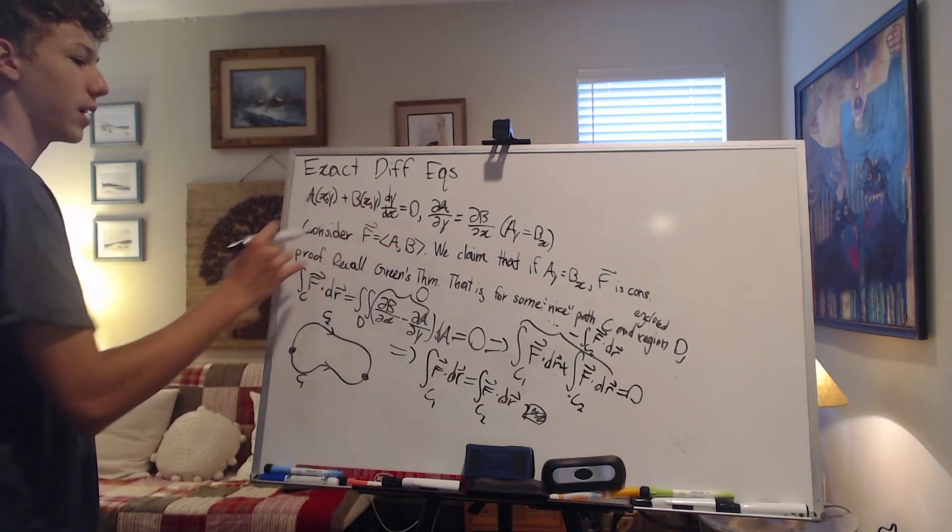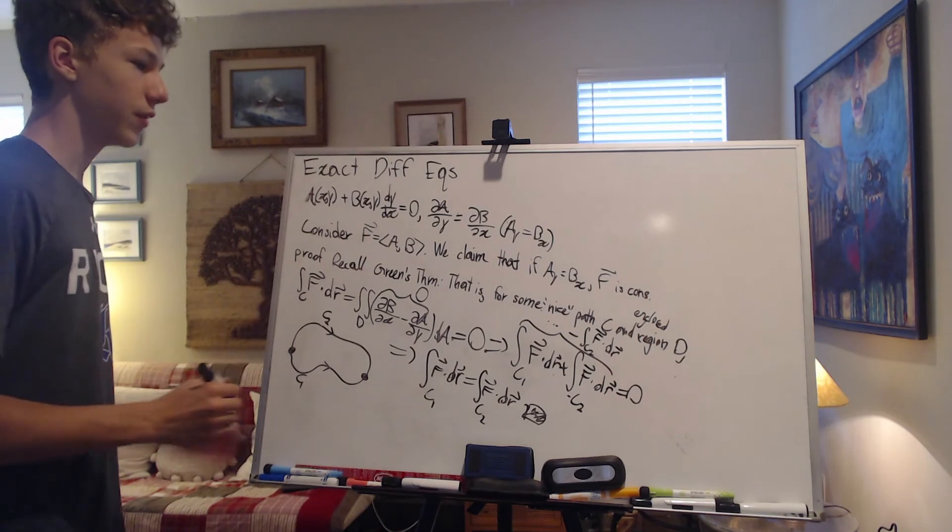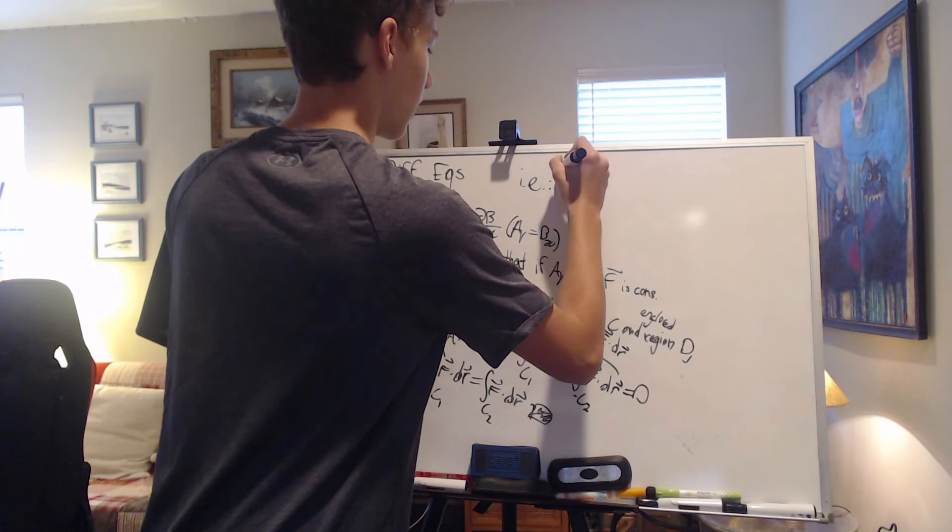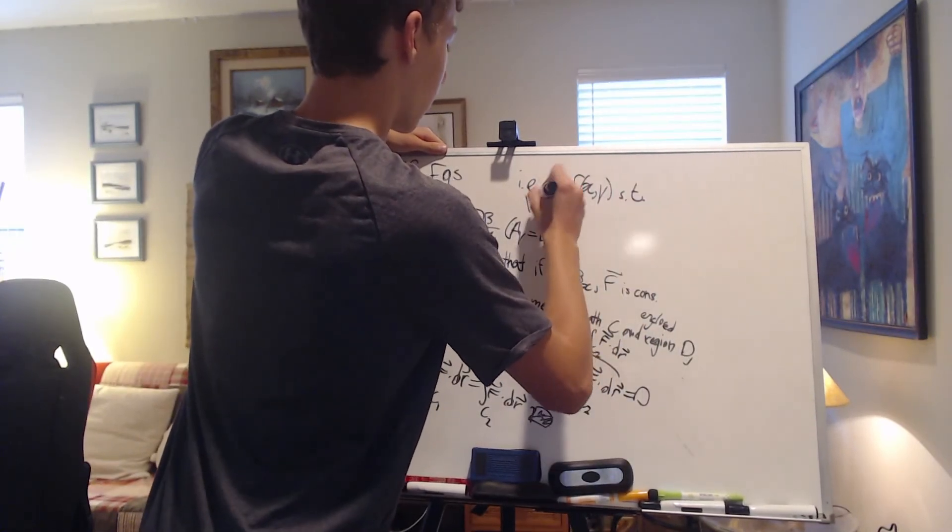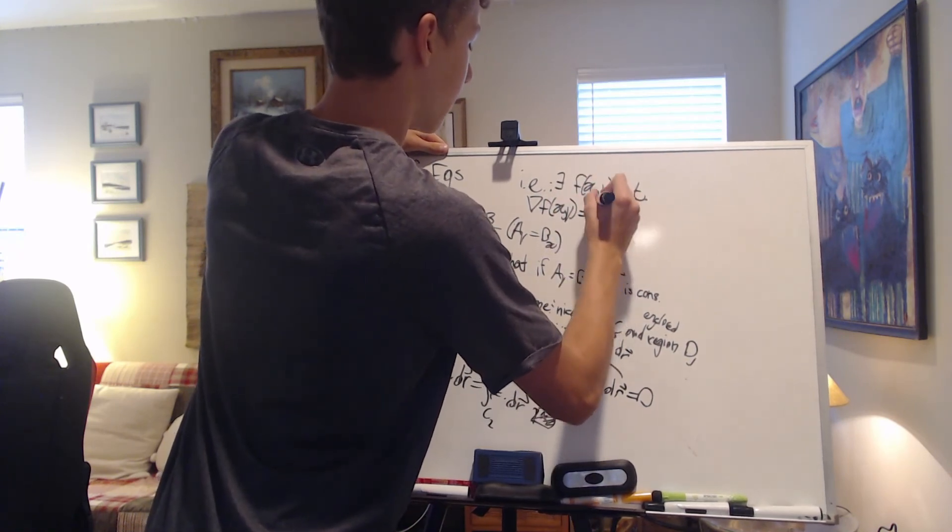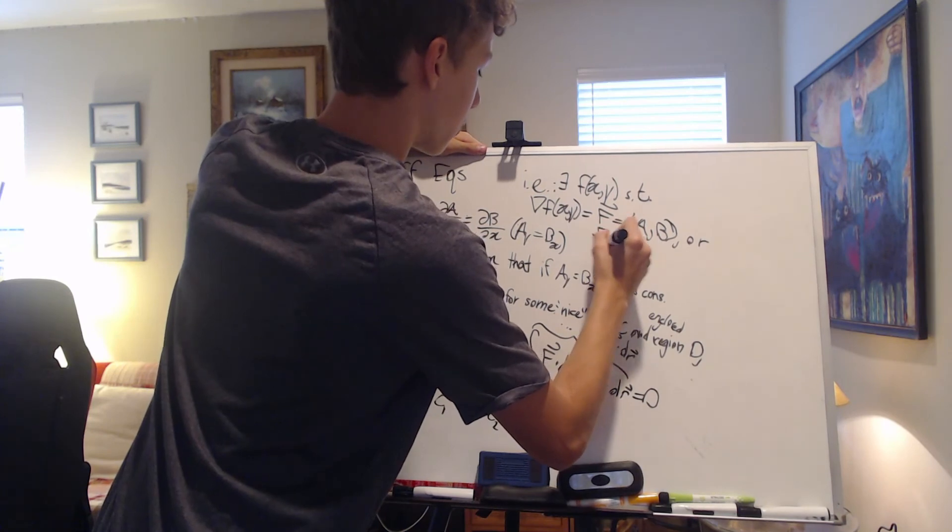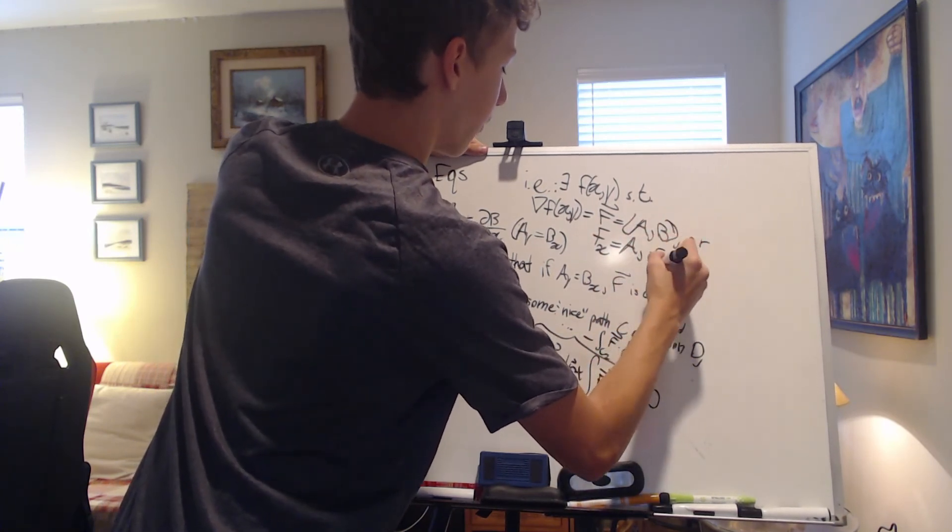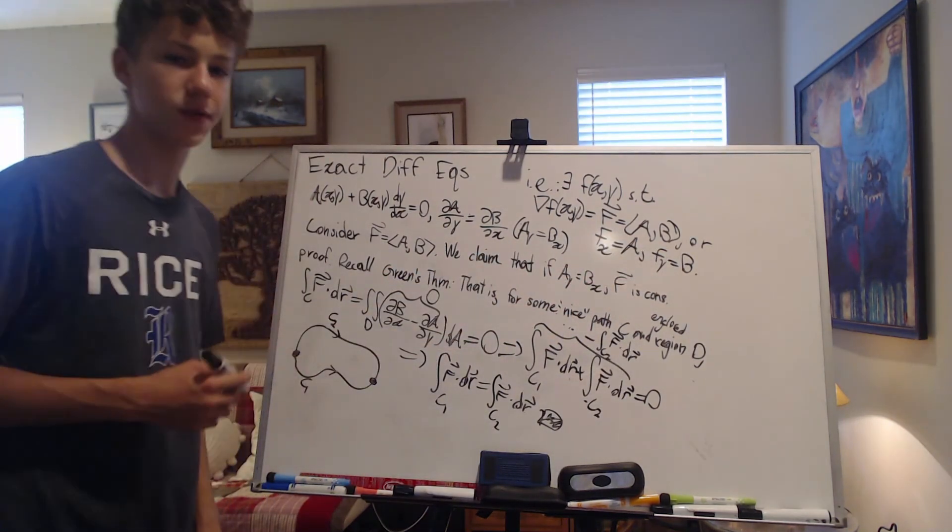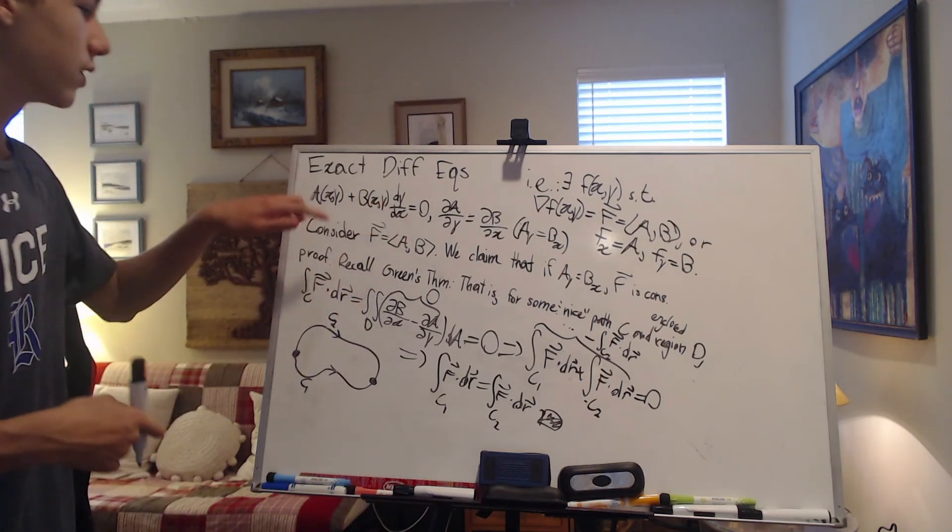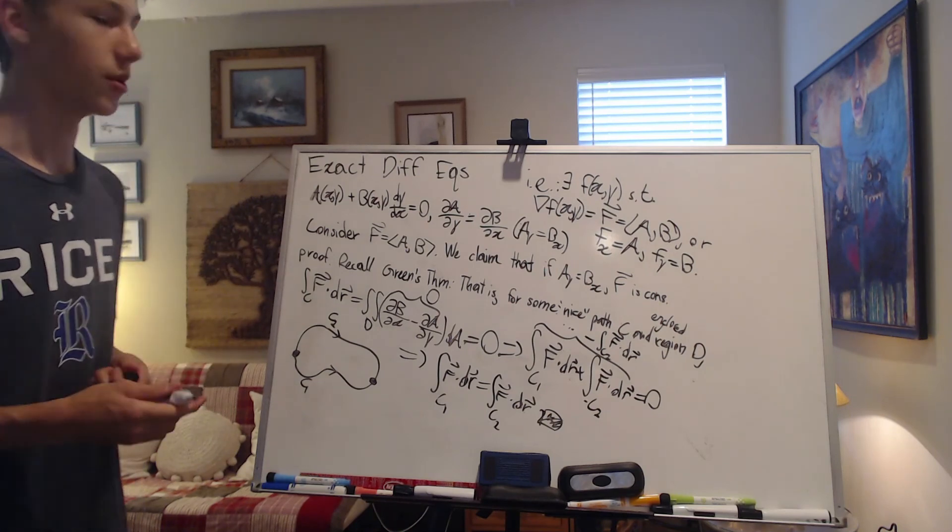So again, let's recap. What have we successfully done? We've successfully shown that if a vector field f with components a and b, and those components satisfy this property, then f is said to be conservative. And what does that mean? There exists f(x,y) such that the gradient of f(x,y) is equal to f equals (a, b). Or another way to say that is that the partial derivative of f with respect to x is equal to a, and the partial derivative of f with respect to y is equal to b. So that'll kind of create the framework for the next video. We're going to finish this off. We're going to give a nice way to actually solve this differential equation. A set of explicit solutions are going to be given in the next video. So I'll see you then.